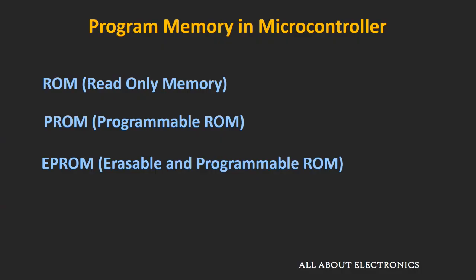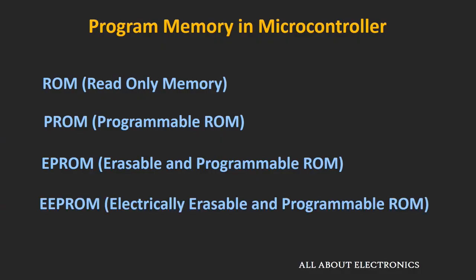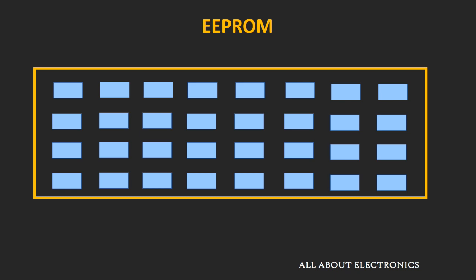Then the fourth kind of memory came into the market: the EEPROM, which stands for Electrically Erasable and Programmable ROM. Unlike EPROM, we can erase the content of this EEPROM using electrical voltages. In this EEPROM, it is possible to read, write, or erase one particular byte or one particular word of data at a time.